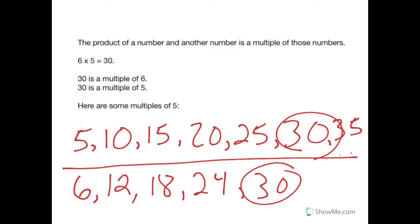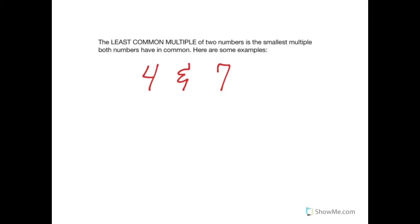A number can be a multiple of several different numbers. For example, if we did our multiples of ten. Ten times one is ten. Ten times two is twenty. Ten times three is thirty. Thirty is a multiple of ten. Thirty is a multiple of five. Thirty is a multiple of six. Let's move on.